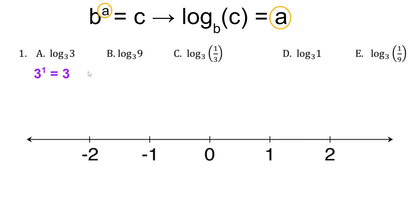So for the first one, we know 3 to the first power is 3. So that means that a is 1 because the exponent was 1. We know 3 to the second power is 9. So that means that b should go at 2 on the number line because the exponent was 2.